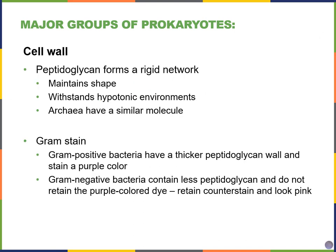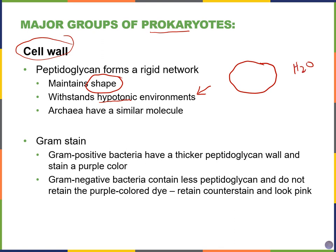The cell wall is important to bacterial cells because it helps maintain the shape of the cell — those three basic shapes: sphere, rod, and spiral. It also allows the cell to resist hypotonic environments, where water rushing in could cause the cell to burst. Cells with cell walls can withstand this water entry better than those without. Archaea have similar molecules in their cell walls, but it's another protein-sugar complex rather than peptidoglycan.